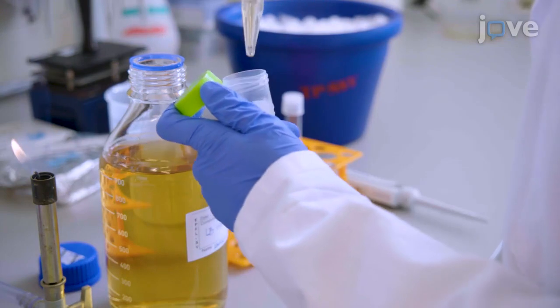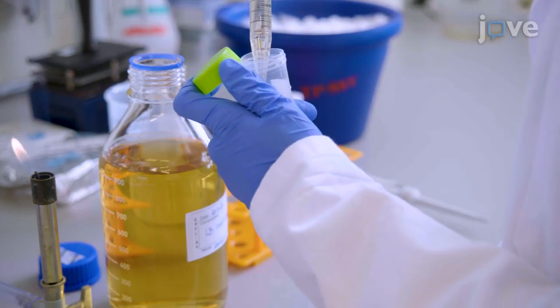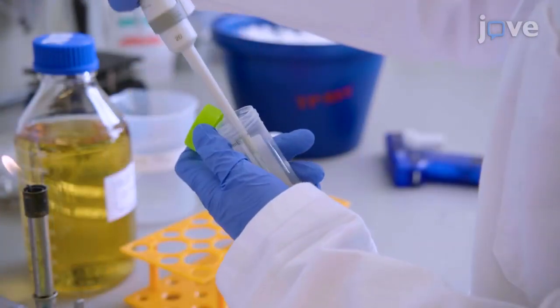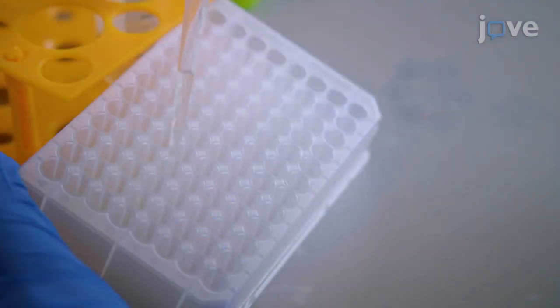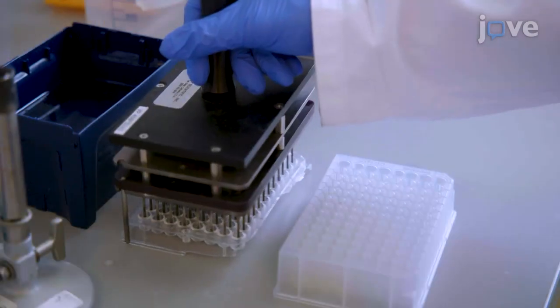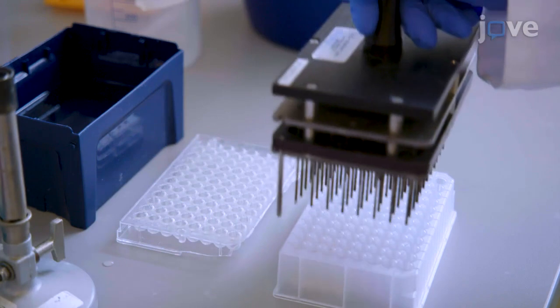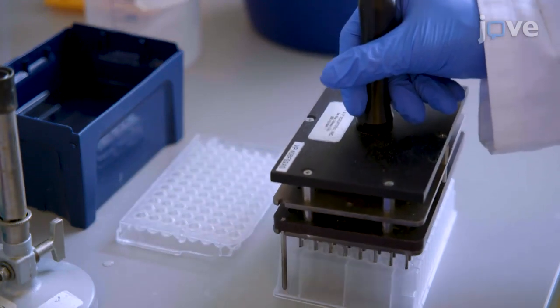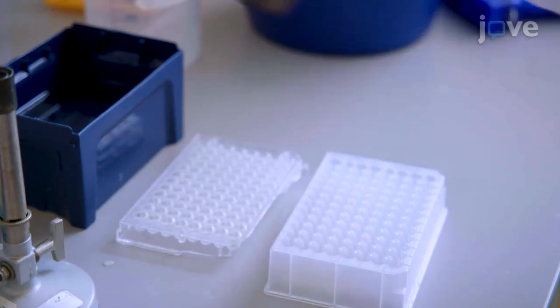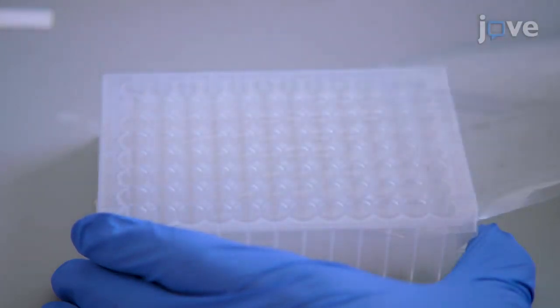Prepare the starter cultures by combining 20 mL of LB media with 20 µL of ampicillin. Add 300 µL of the media into 35 wells of a sterile 96 deep well plate. Inoculate each of them with its respective strain, except elongation factor thermo-unstable, or EF-TU, and seal the plate with a breathable membrane.